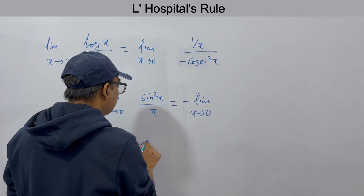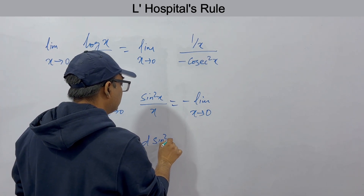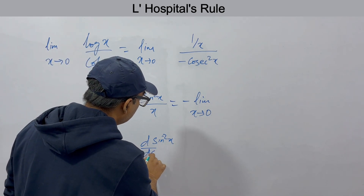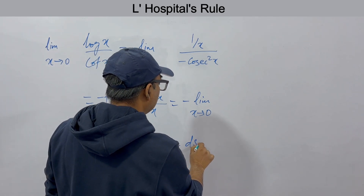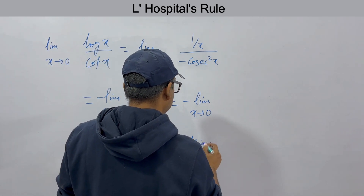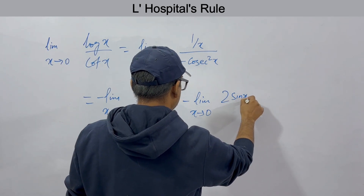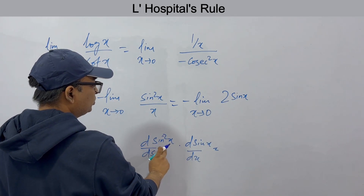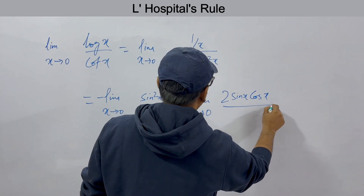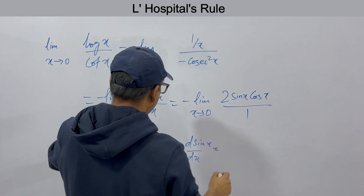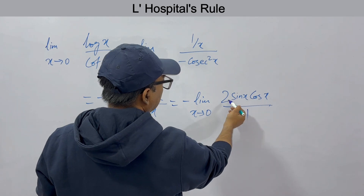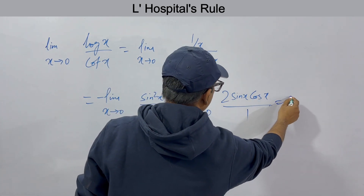Now taking the derivative of sin²(x) / x: using the chain rule, derivative of sin²(x) is 2·sin(x)·cos(x), so this gives limit x→0 of 2·sin(x)·cos(x) / 1, which can be written as 2·sin(x) × (sin(x)/x) × cos(x). The denominator derivative is 1. Now putting the limiting value 0: sin(0)/0 → 1, cos(0) = 1, so 2 × 0 × 1 × 1 = 0. The limit is 0.